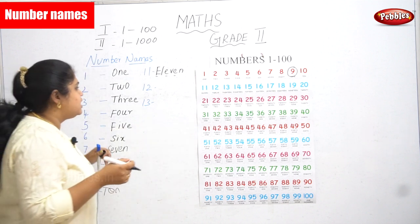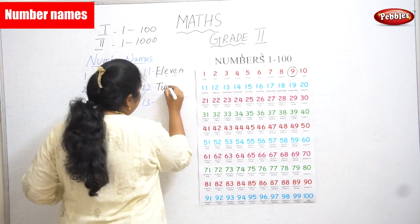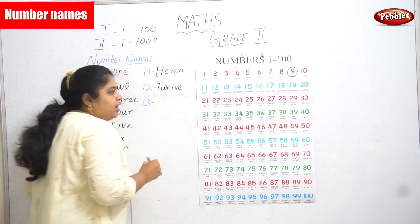Let's tell along with me. Spelling for 11: E-L-E-V-E-N. See here how many E's are repeating again and again in the number name eleven. Next, 12: T-W-E-L-V-E, twelve.